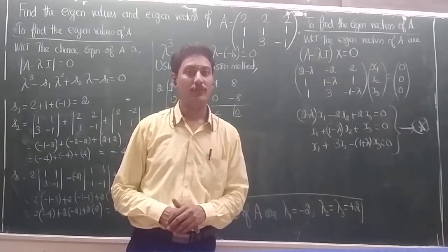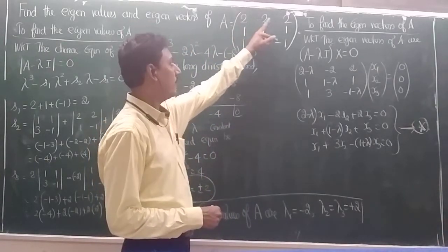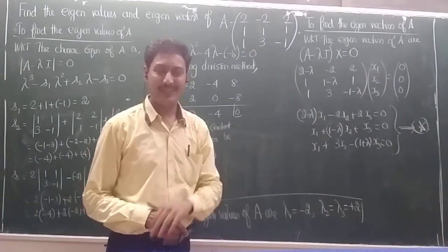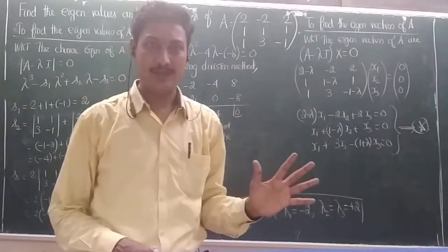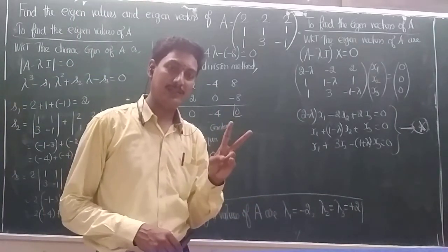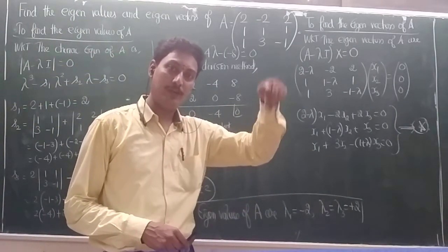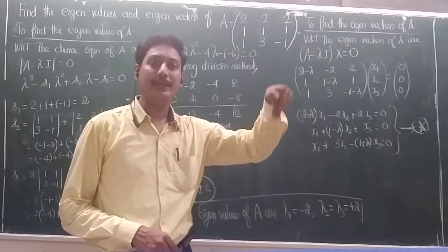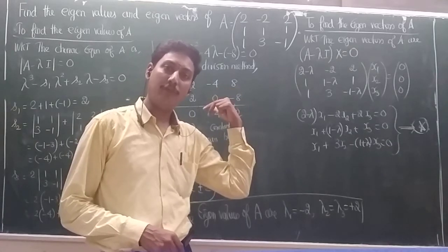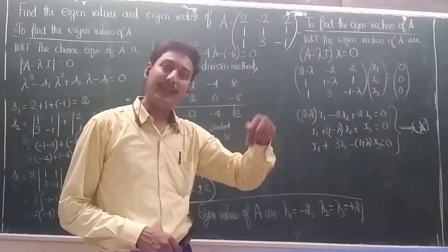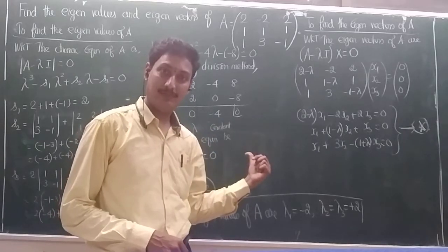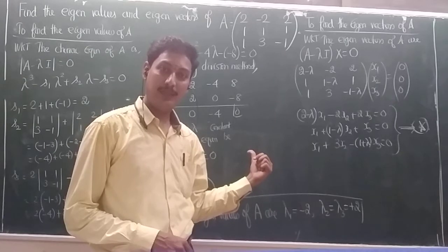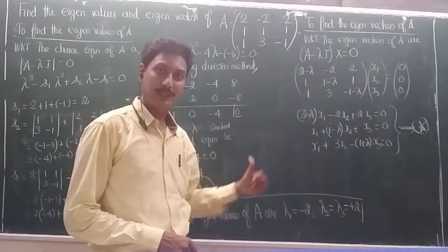We need to find the eigenvalues and eigenvectors of the matrix: 2, -2, 2 / 1, 1, 1 / 1, 3, -1. It is clear this is a non-symmetric matrix. For non-symmetric matrices there are two cases — distinct eigenvalues and repeated eigenvalues. This is the type with a repeated eigenvalue, and it involves an interesting technique for finding eigenvectors.